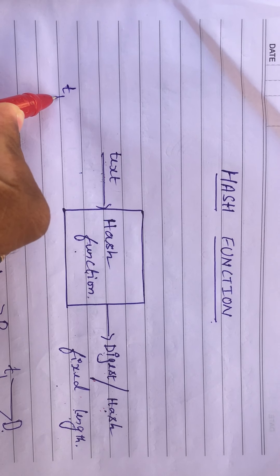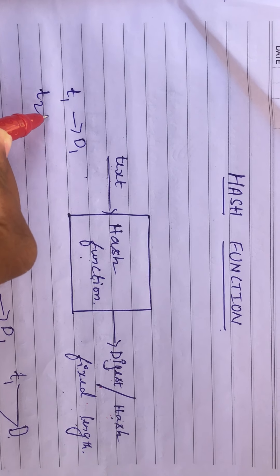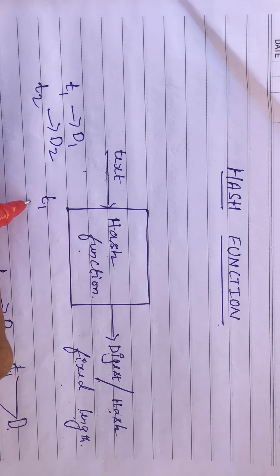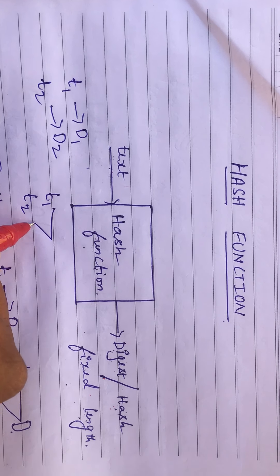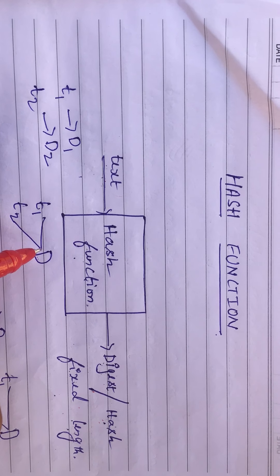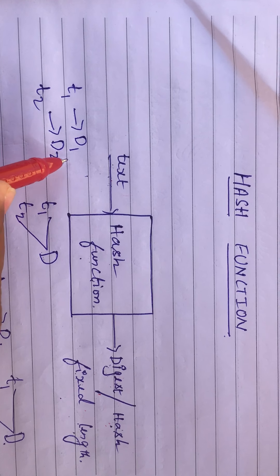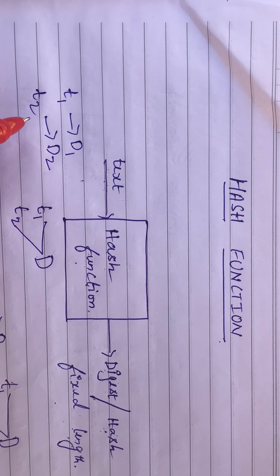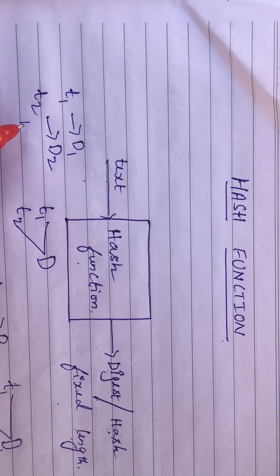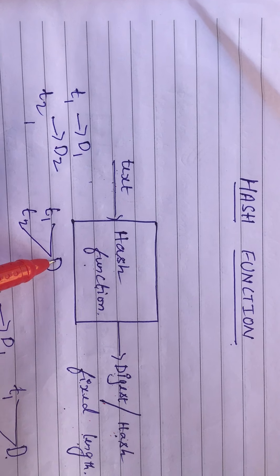For example, if my text is t1, it will give digest d1. If my text is t2, it will give digest d2. Suppose text t1 and text t2 both give the same digest — this is called a collision. If text t1 gives digest d1 and text t2 gives digest d2, this is called the one-way property.